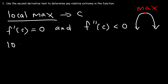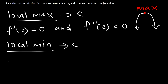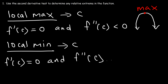Now, to use the second derivative test to identify the local minimum, which will occur at a critical number, f'(c) must be 0. The second derivative at that critical number has to be greater than 0, or positive, which means it has to be concave up. So we're going to have that shape, and we can see that we have a minimum at the bottom.